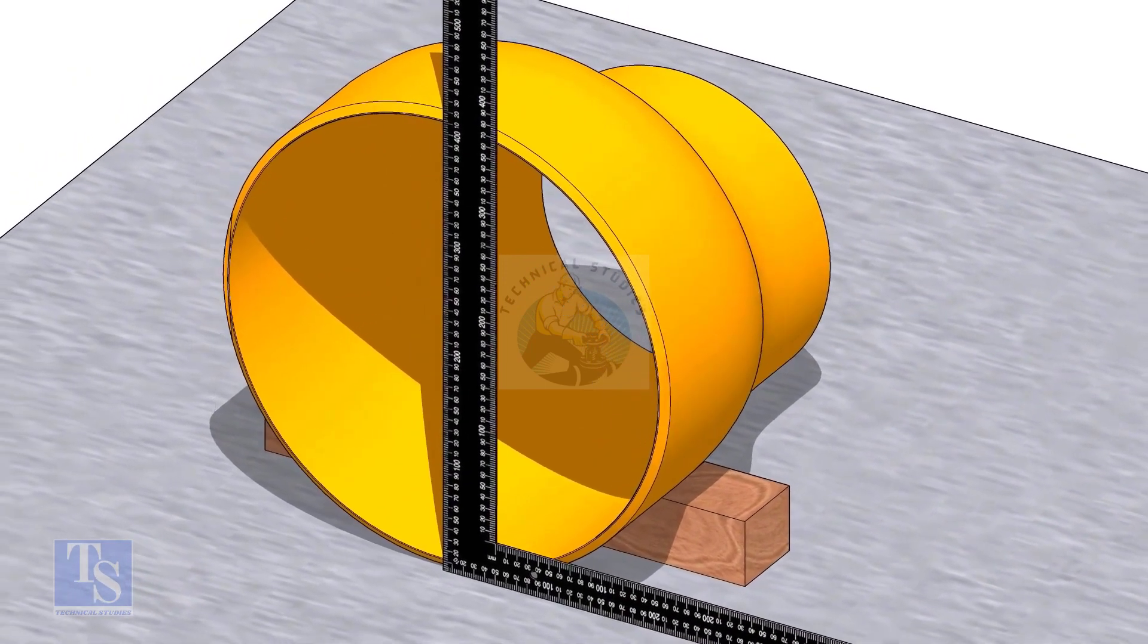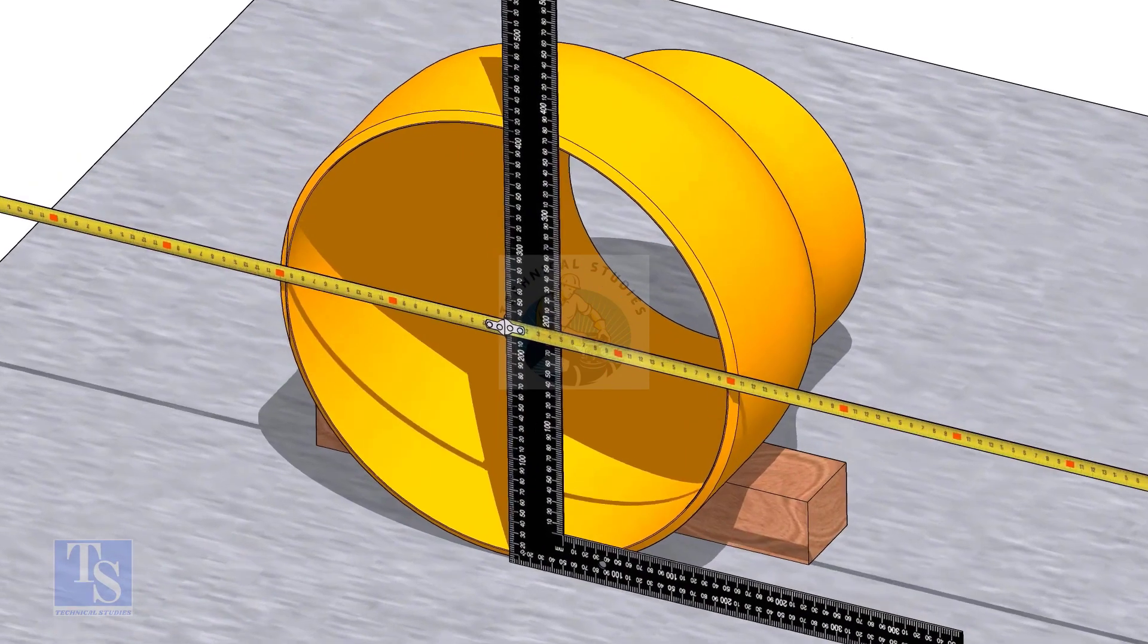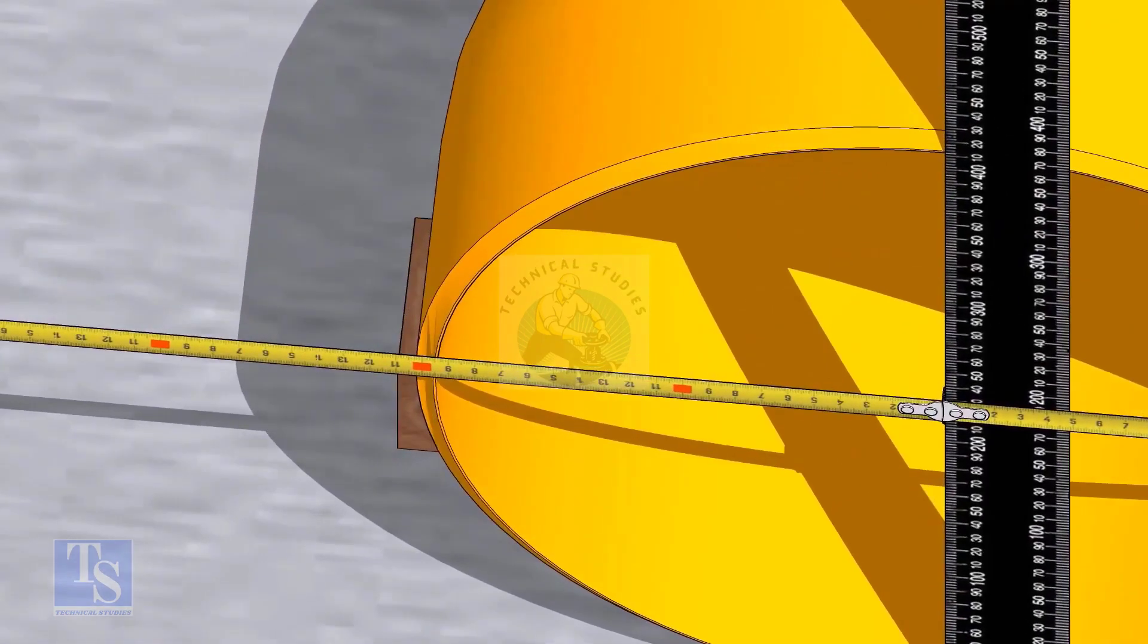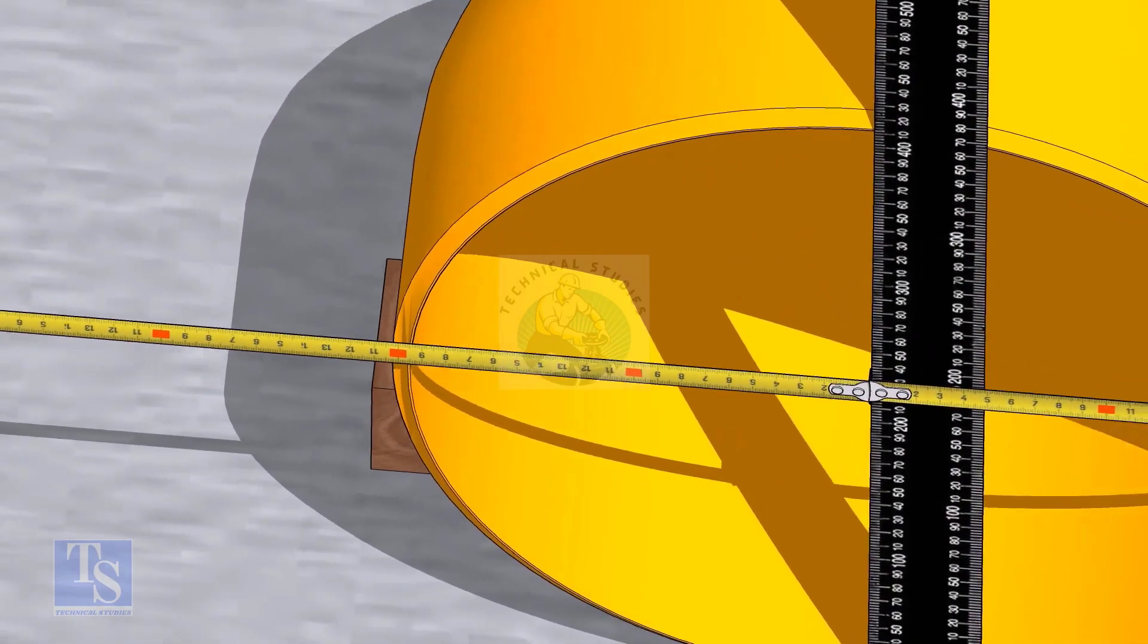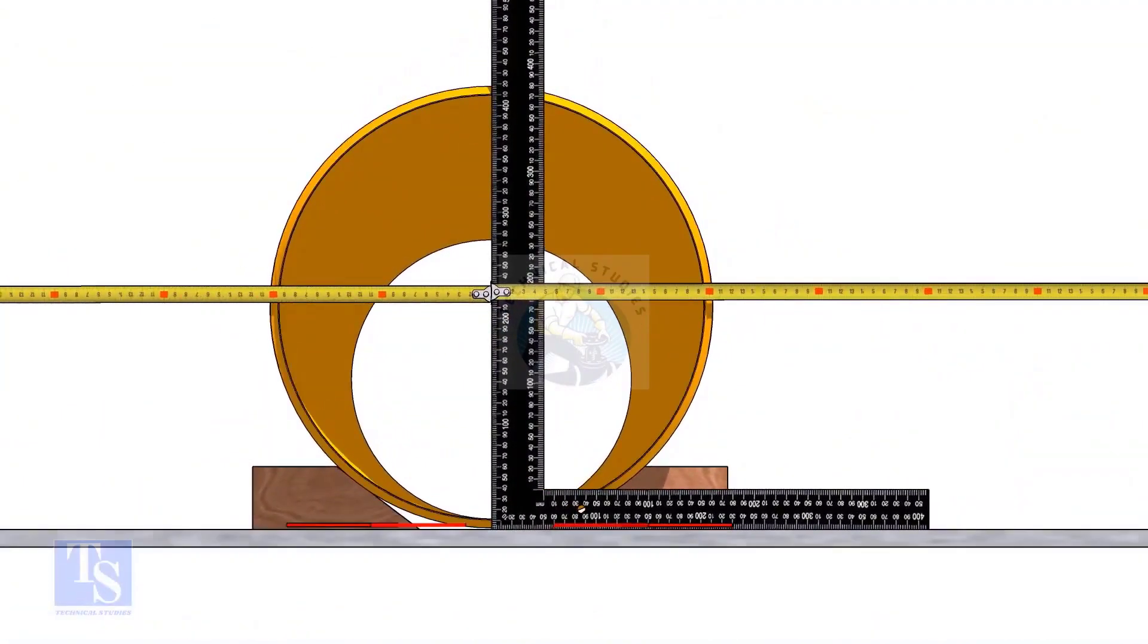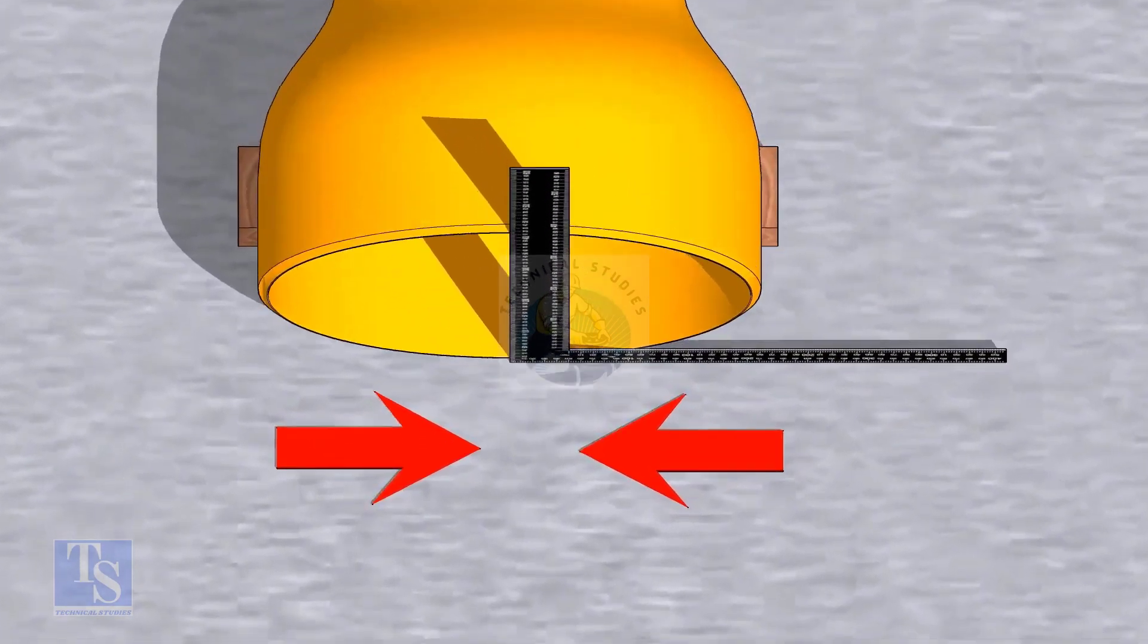Put a right angle on the face of the reducer as shown. Measure the distance from the right angle to the outer face of the reducer. Make it equal by moving the right angle. Mark lines where the right angle touches the reducer as shown.